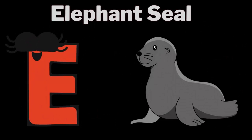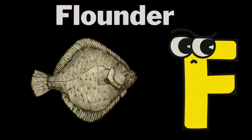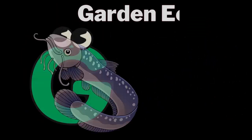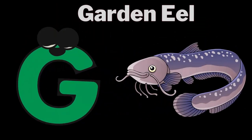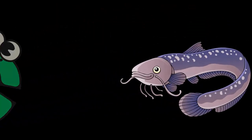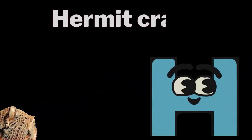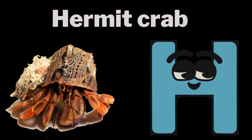E for elephant seal. F for flounder. G for garden eel. H for hermit crab.